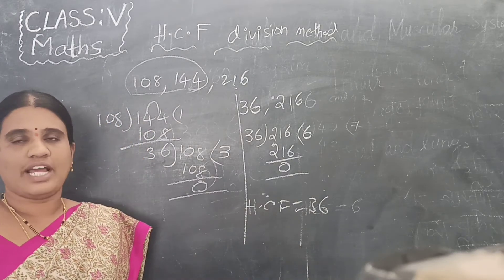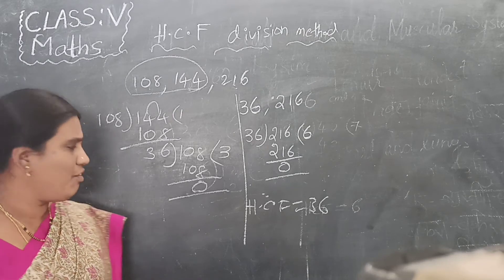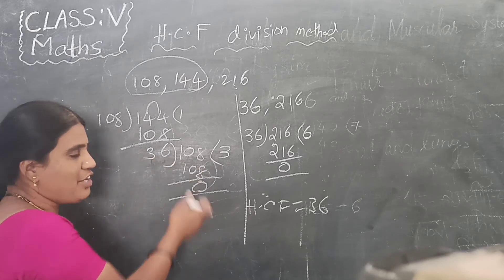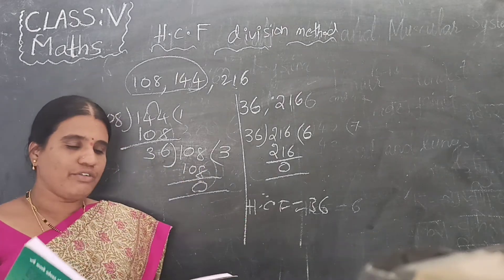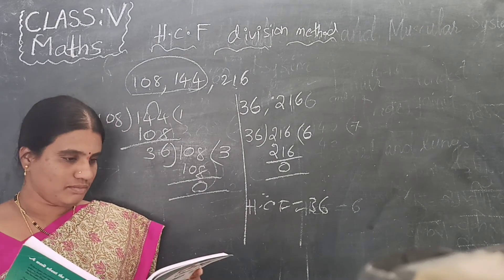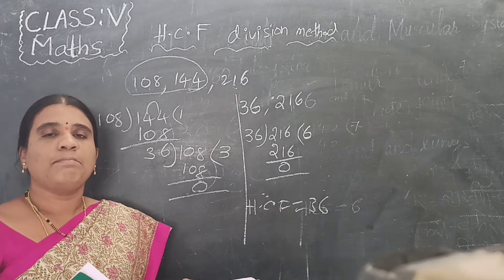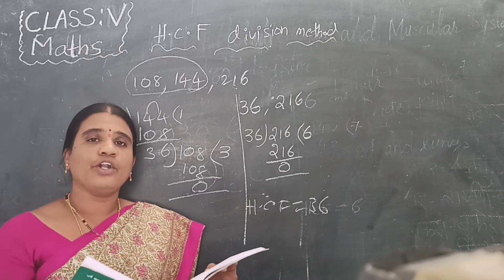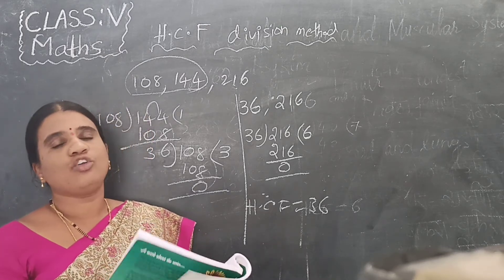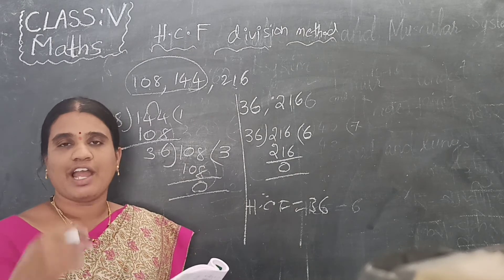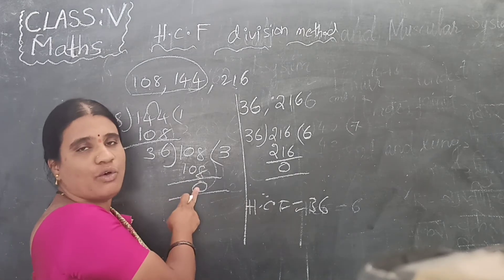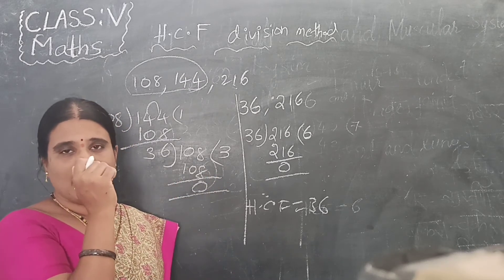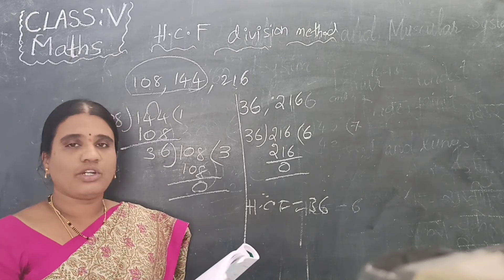Understood? Like this, we do the division. If you don't get 0, then again with that remainder you have to continue — it is a continuous process. If you want, check the example on page 100: Find the GCD of 256 and 300. Observe that and you will get the idea of how to do the continuous process. Then complete exercise 5.